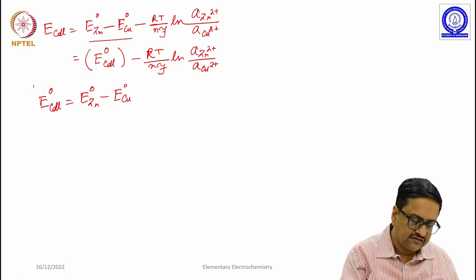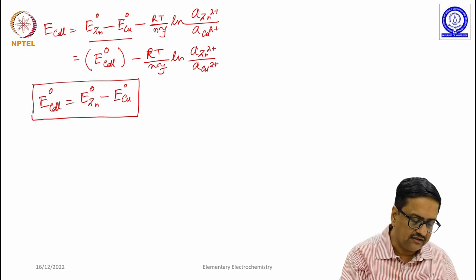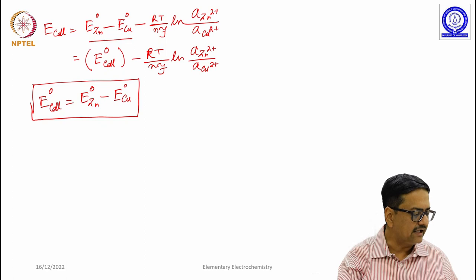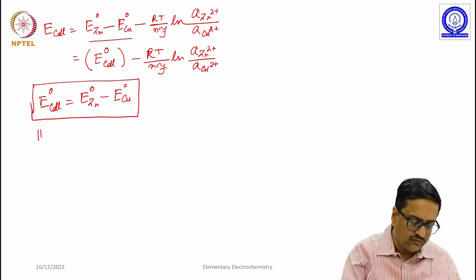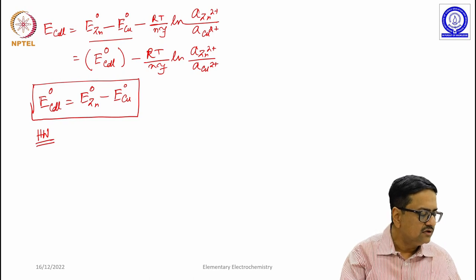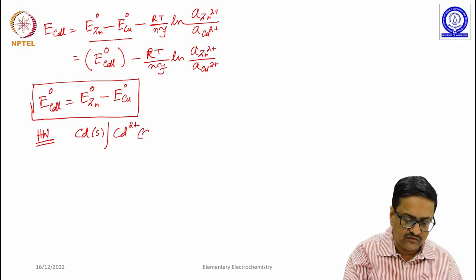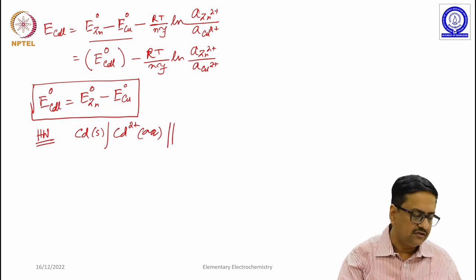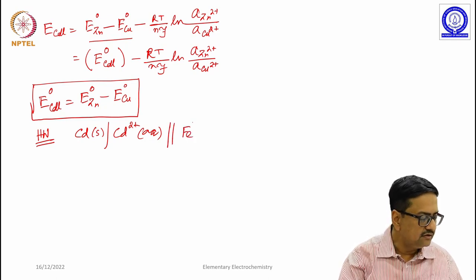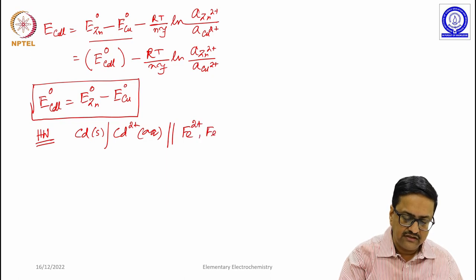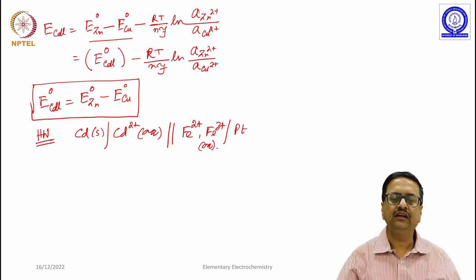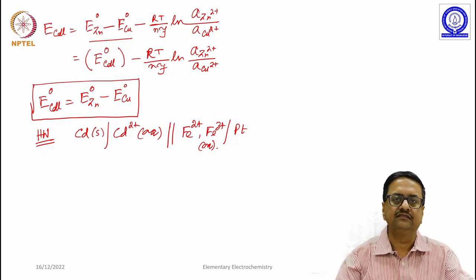I am giving you a homework to work out: what will be E⁰_cell for the cell where cadmium solid is in equilibrium with Cd²⁺(aq), coupled with the Fe²⁺/Fe³⁺ system with platinum as electrode. From here we will continue in the next class. Thank you.